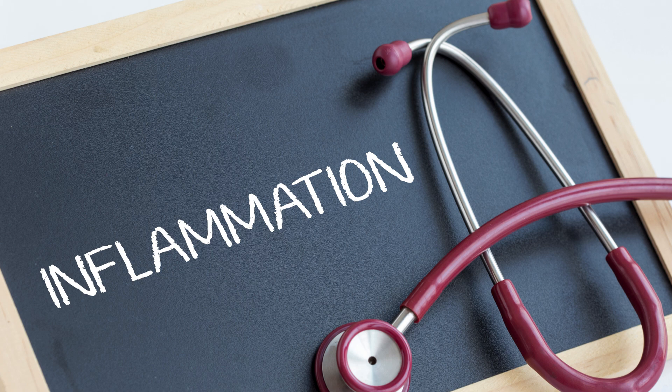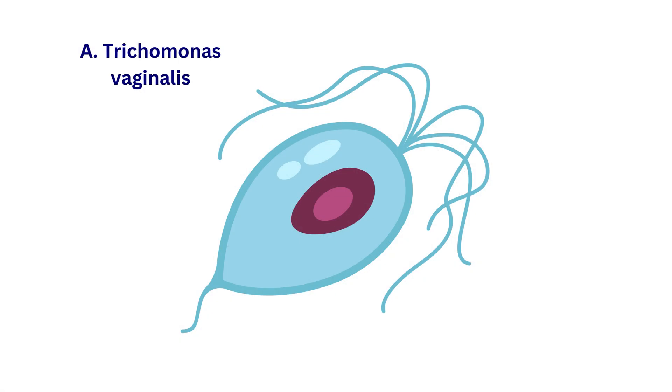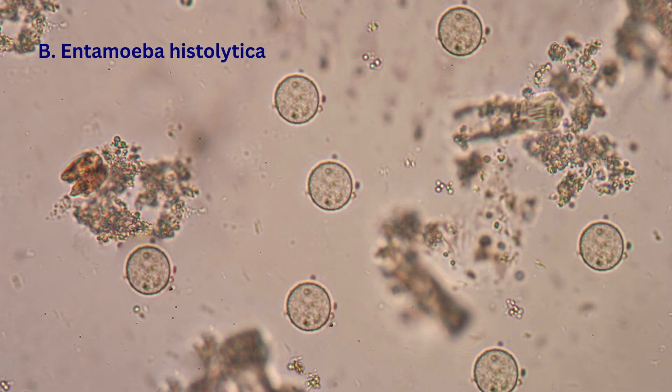Now let's clear up why the other options are incorrect. A. Trichomonas vaginalis is a protozoan, and though its motile trophozoites can occasionally be found in urine samples, it does not produce ova.